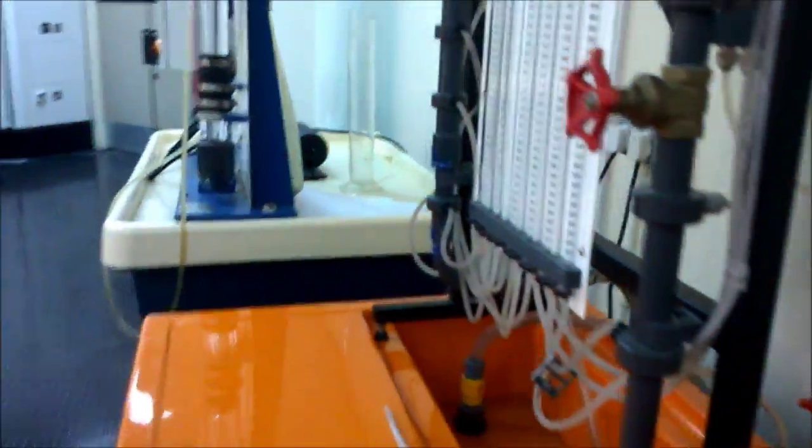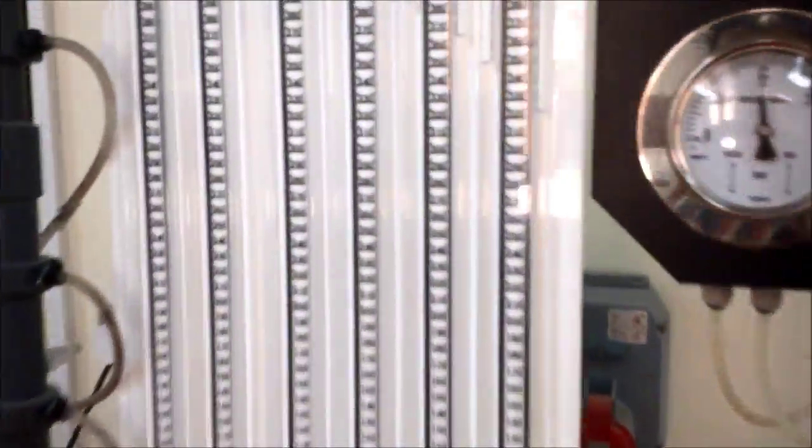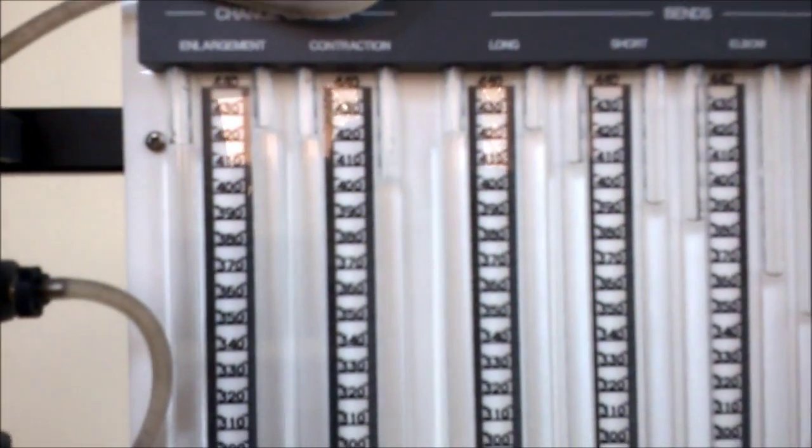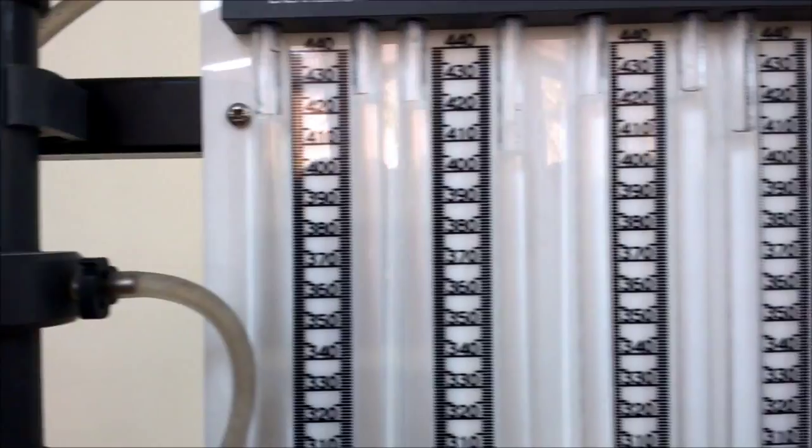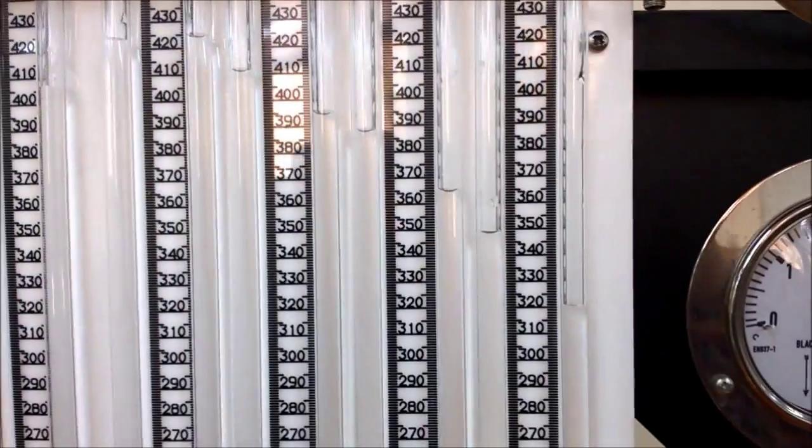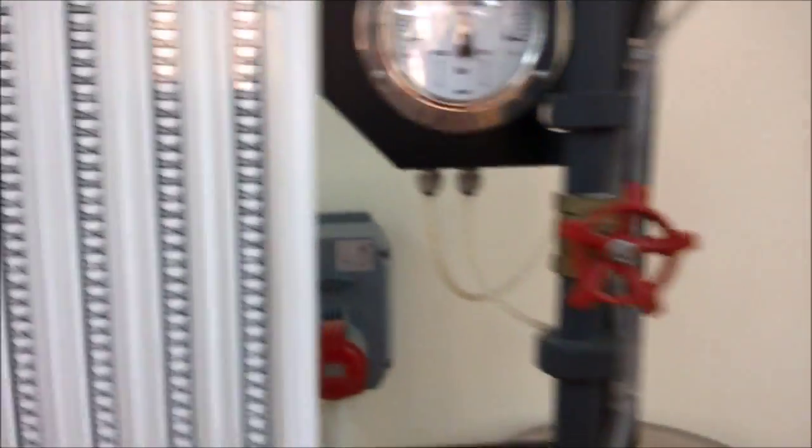Now, slowly open the flow control valve and start with the lowest possible flow rate in order to have a laminar flow. Take the readings of the manometers height. In order to determine the volumetric flow rate, close the ball valve.